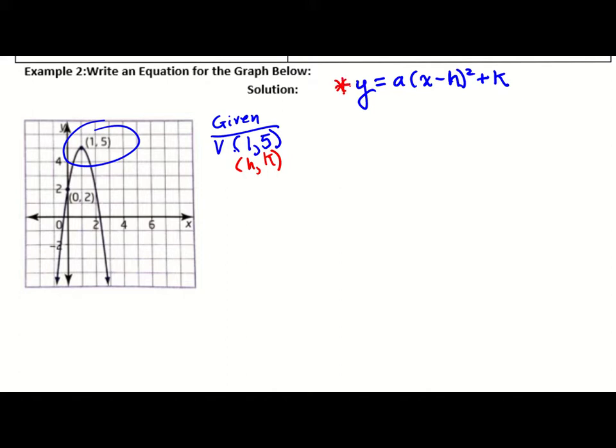Let's rewrite that equation. We got y equals a times x minus 1 squared plus 5. So this is the objective function that we are looking for.